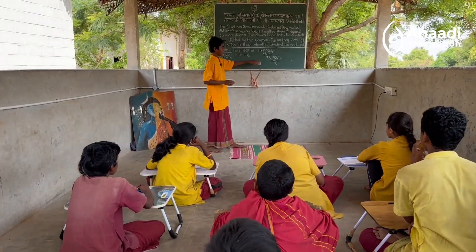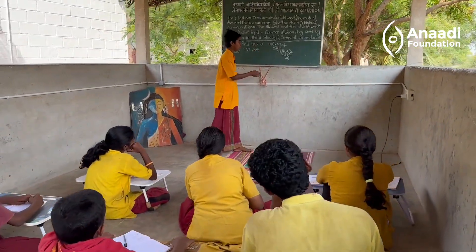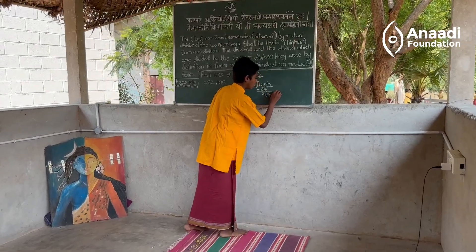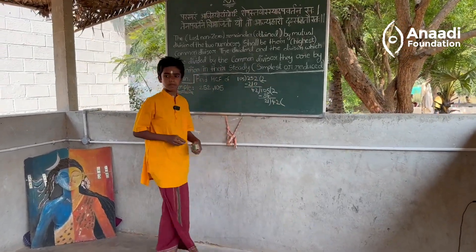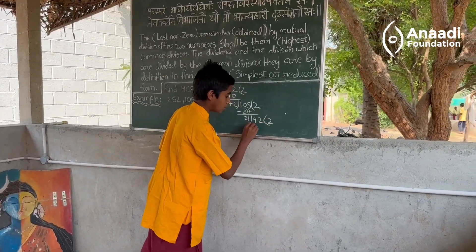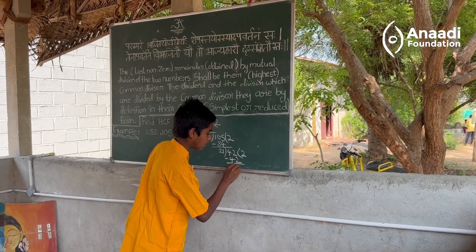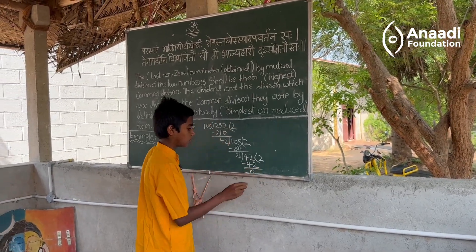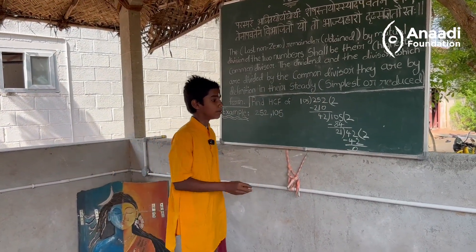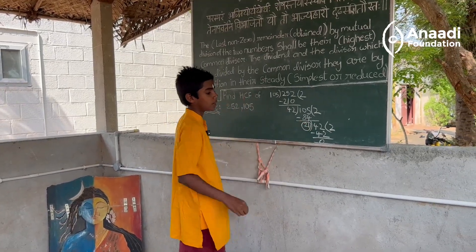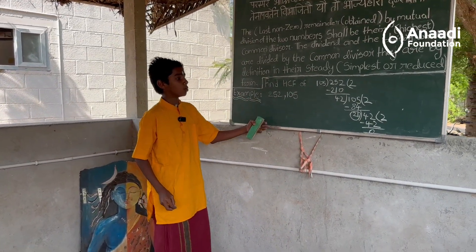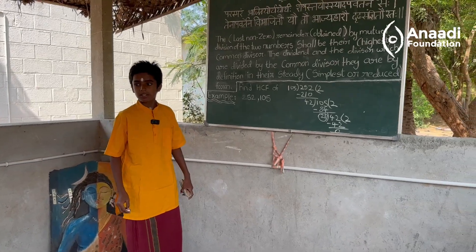Now, again we use the previous divisor to divide, which is 42. How many times does 21 come in 42? 2 times, giving 42, which leaves a remainder of 0. So we take the last non-zero remainder, which is 21. Therefore, the HCF of 252 and 105 is 21.